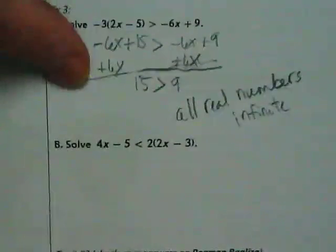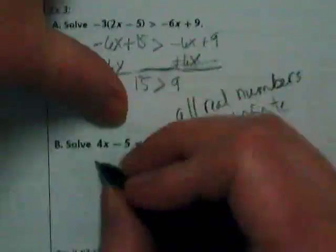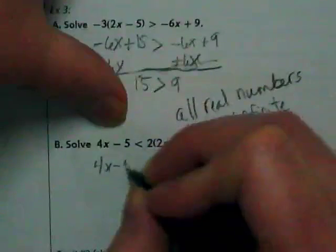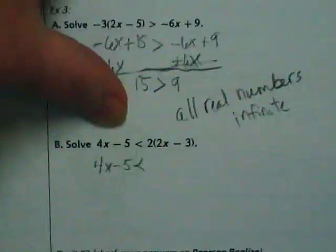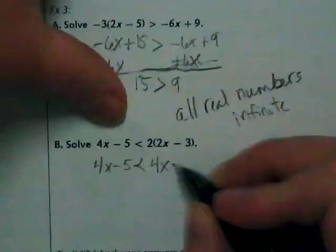Let's do example B together. There's nothing I need to do on the left side except rewrite it. But on the right side of the inequality, I need to distribute the 2. So we get 4x minus 6.